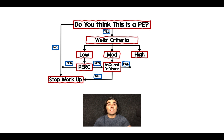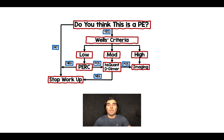If the D-dimer is positive, then you're going to your high-risk pathway, which is where you're going to do imaging — this is going to be your CT pulmonary angiogram or your VQ scan.